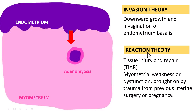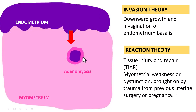The second is the tissue reaction theory, where there is a response to tissue injury. Tissue injury and repair results in myometrial weakness or dysfunction, brought about by trauma from previous uterine surgery or pregnancy, and that results in invagination of the endometrium into the myometrium.